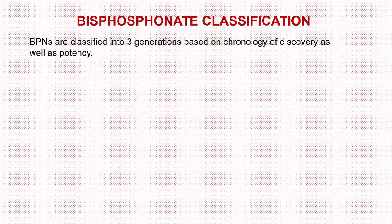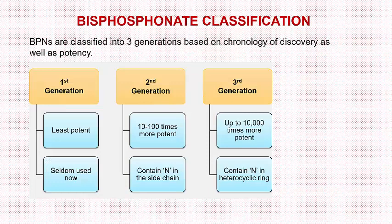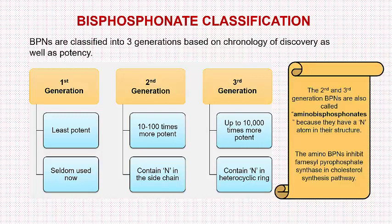Bisphosphonates are classified into three generations based on the sequence of discovery as well as potency. The first generation bisphosphonates are the least potent and are rarely used nowadays. The second generation bisphosphonates are ten to hundred times more potent, while the third generation bisphosphonates are up to ten thousand times more potent than the first generation ones. The second and third generation bisphosphonates are also called amino bisphosphonates because they have a nitrogen atom in their structure.